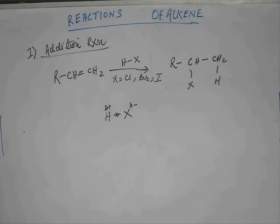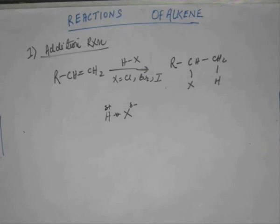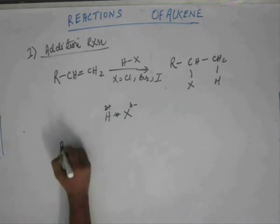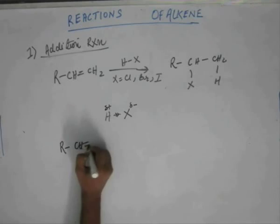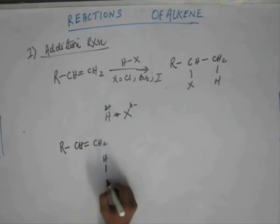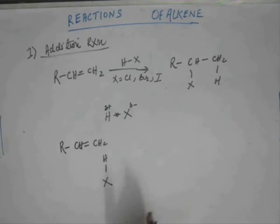Hydrogen will look for an electron donor, and the only one it finds in the system is the alkene. This alkene happens to have high electronic density owing to its pi bond. So hydrogen will urge this alkene — having a pi bond — to donate some electronic density. The alkene, having high electronic density, will have no problem donating slightly more to hydrogen. This is how it all begins — this is step number one.